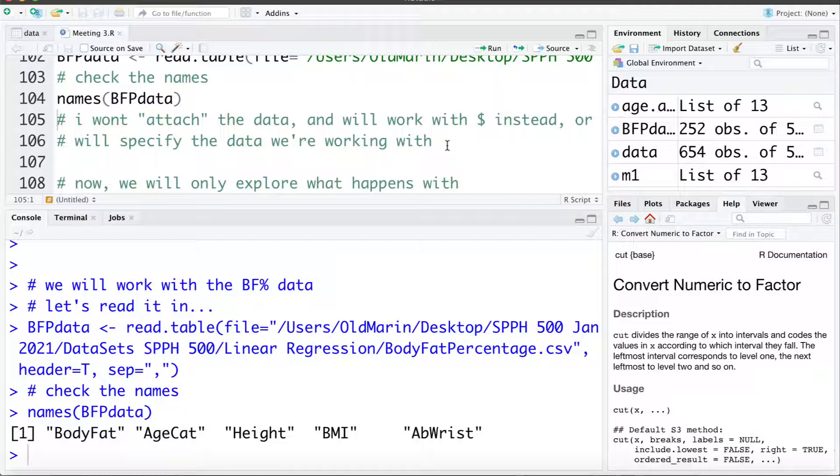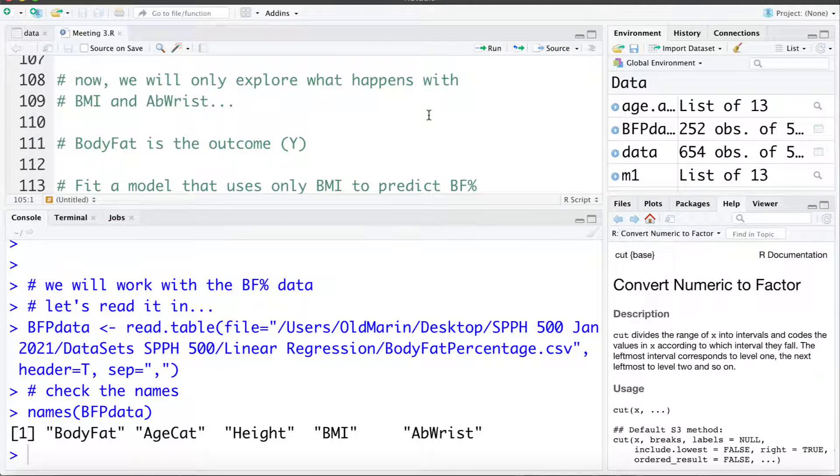Now for now we're just going to explore what happens with BMI and abris. Before getting into it I want to mention that conceptually we can think these variables should be pretty correlated. They're both different measures of body size. BMI is a measure that the higher the number is the bigger the body size is, similar to abris. Abris is the circumference of your abs minus the circumference of your wrist. And again as a body's larger this value is going to get larger. So we can think of BMI and abris as being body size measure A and body size measure B. These are two variables that are measuring almost the same thing or capturing similar pieces of information.